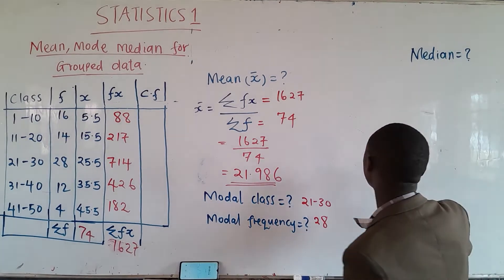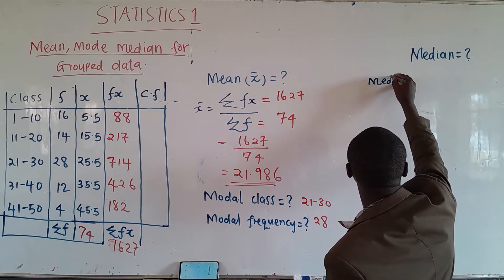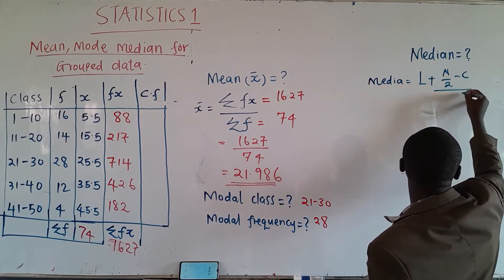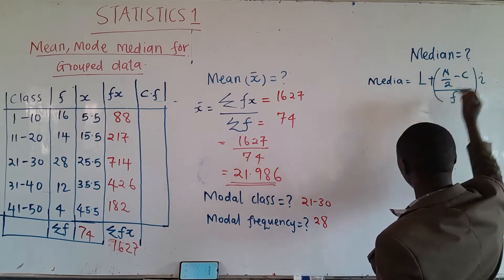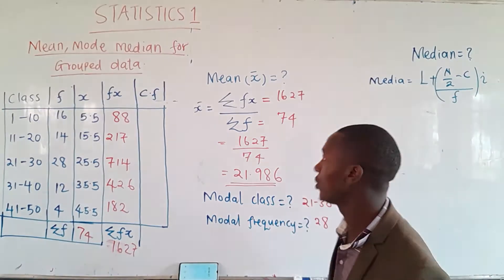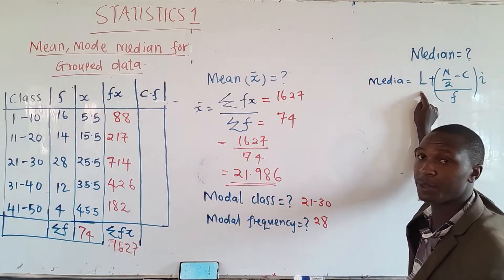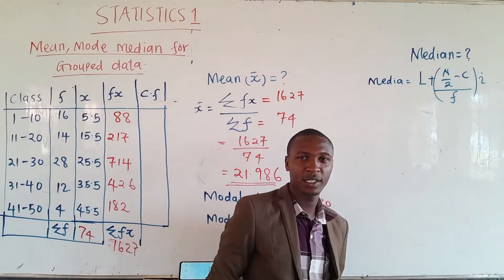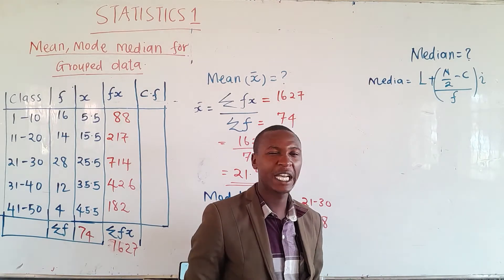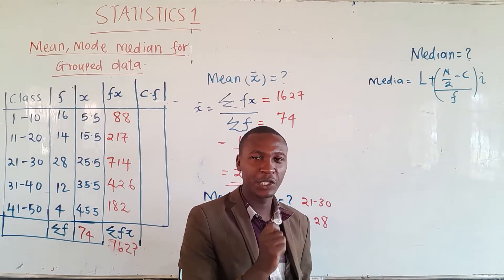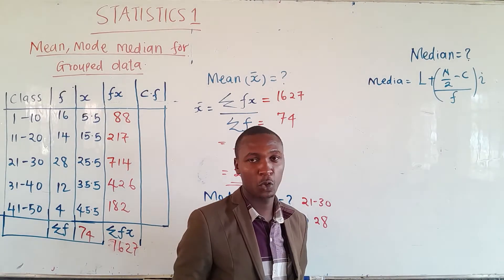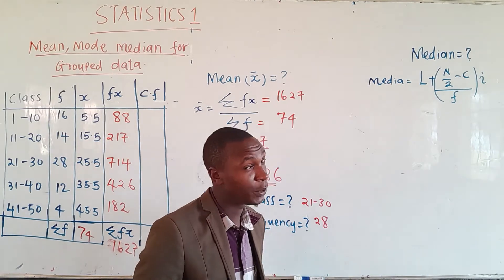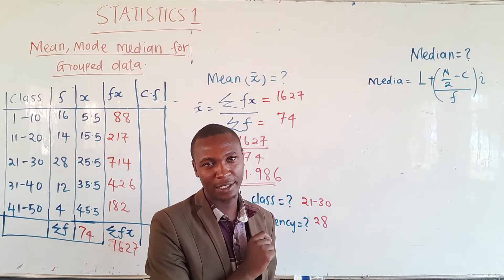Now we can work out the median. The formula for the median is: Median = L + [(n/2 − c) ÷ f] × i. Here, L is the lower limit of the median class, n is the total frequency, c is the cumulative frequency above the median class, f is the frequency of the median class, and i is the class interval.